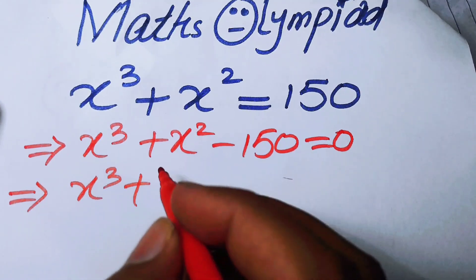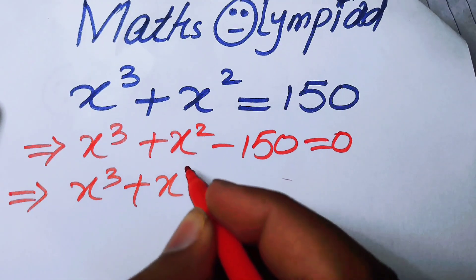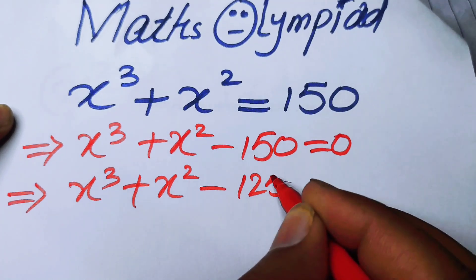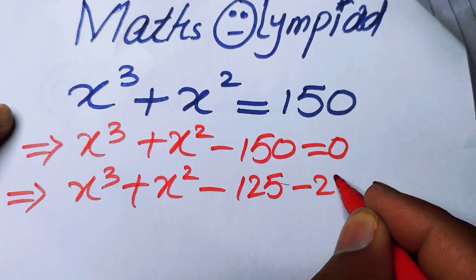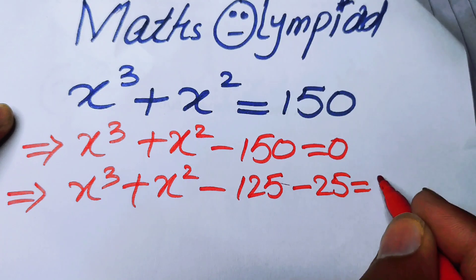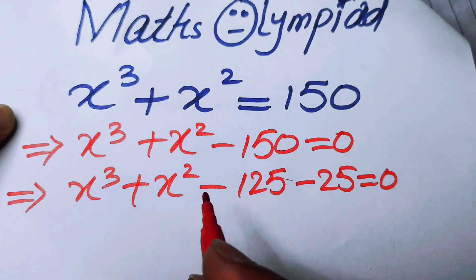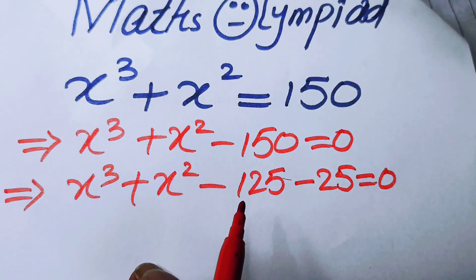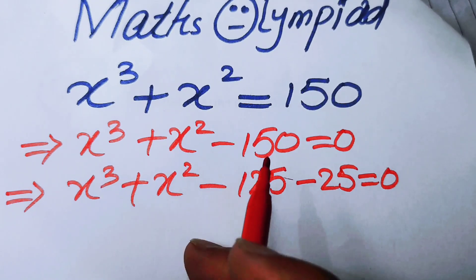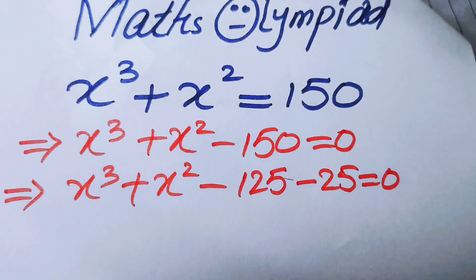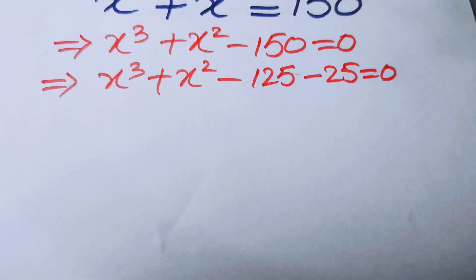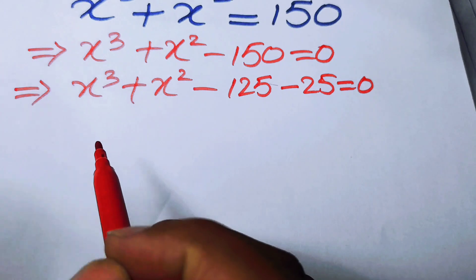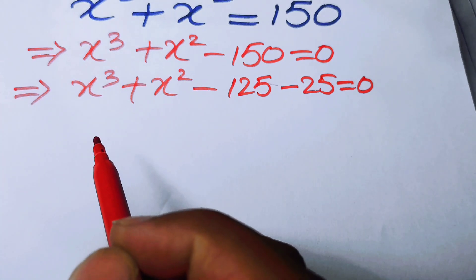We rewrite 150 as x cubed plus x squared minus 125 minus 25 is equal to 0, because minus 125 and minus 25 equals minus 150. After that, we will make pairs of the cubic terms and the square terms.